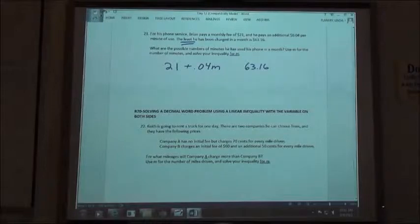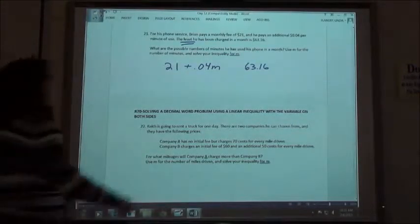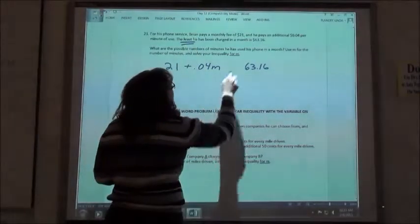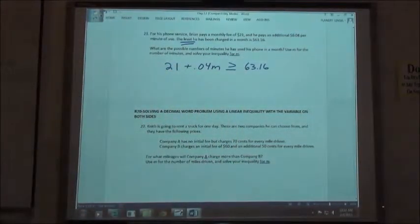If $63.16 is the least, that means that's the lowest he's been charged, then my inequality sign should be not less than or equal to, but greater than or equal to. This is the least, that's the lowest amount. So it could be the $63.16, but it could be more than that.